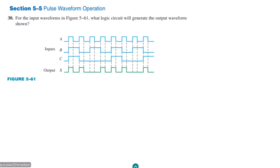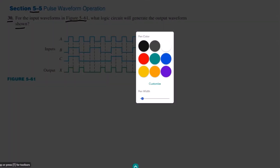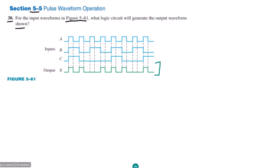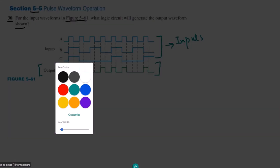Welcome back guys. This is Section 5.5, Question 30. The statement is: for the input waveform in Figure 5.61, what logic circuit will generate the output waveform as shown? We have to find out the logic circuit for it, and for that we have different steps. Let me write them down one by one.